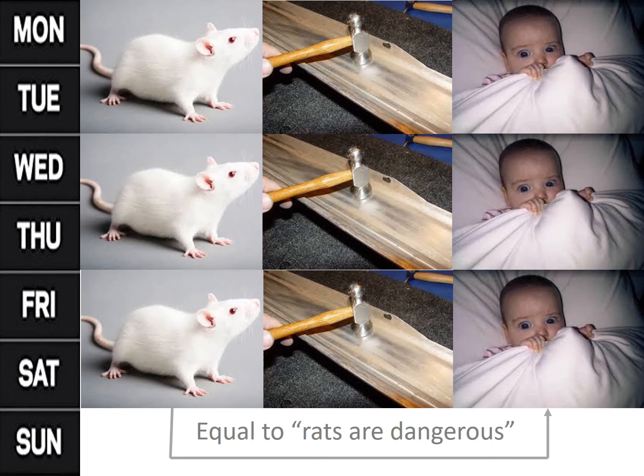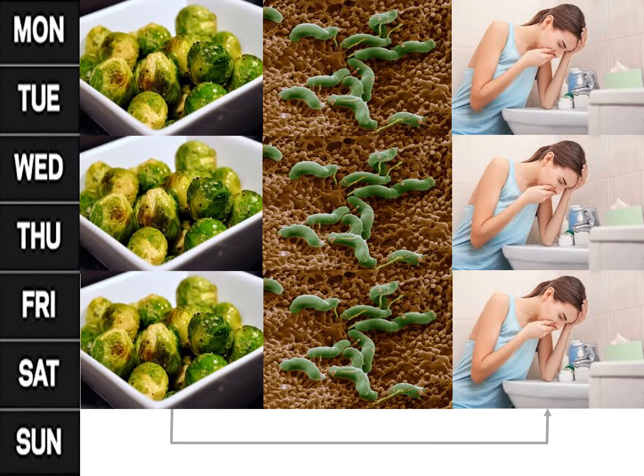As implied earlier, some of our innate or natural tendencies can influence the impact of classical conditioning. We're programmed to learn some associations more rapidly than other associations. For example, we readily learn to associate specific tastes, such as the taste of sprouts, with nausea.